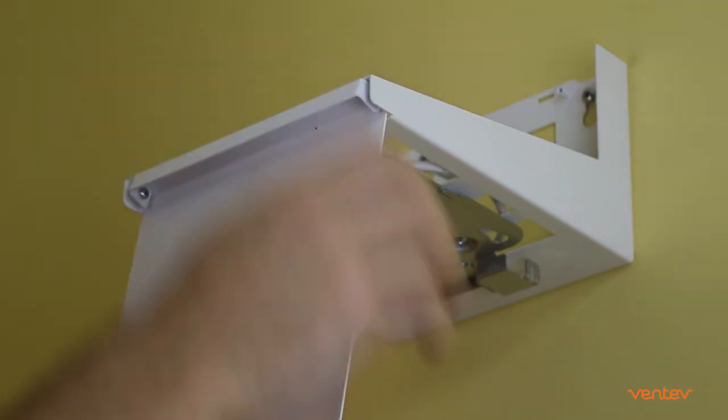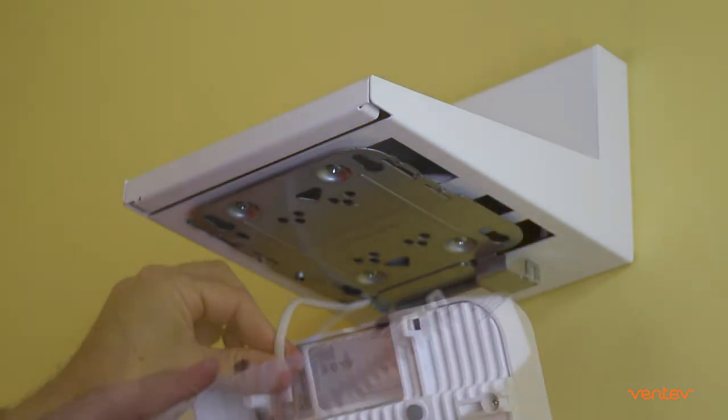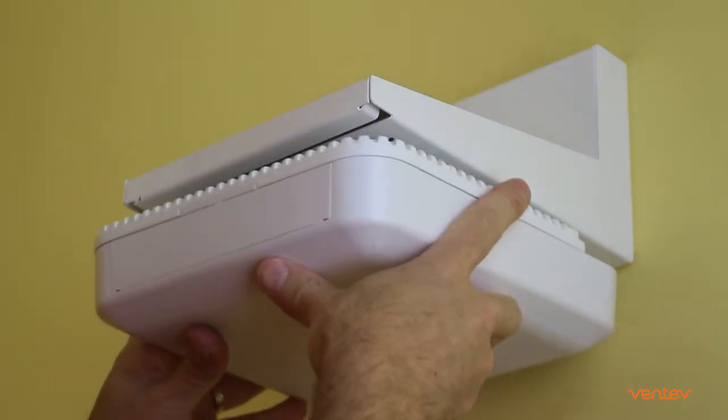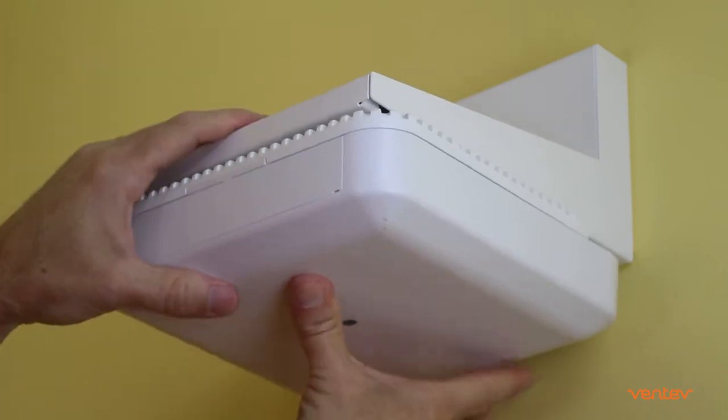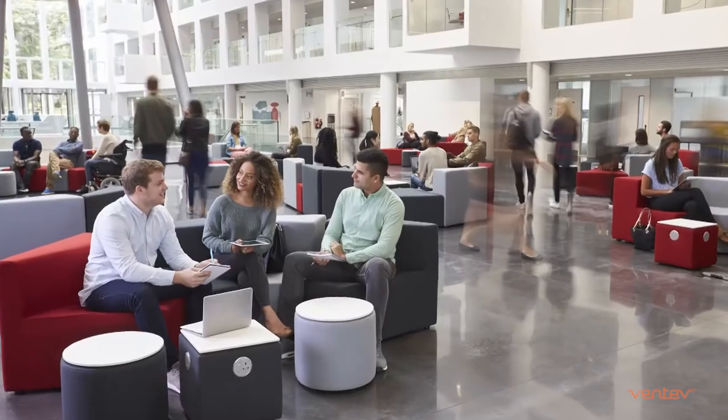The wall bracket is available with a cover to conceal cabling and protect against dust. The cover swings down for easy access to the AP and cables. Ensure reliable Wi-Fi in warehouses, hospitals, transportation centers, and universities with right angle wall brackets.